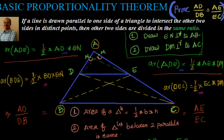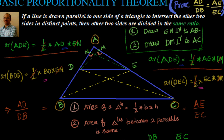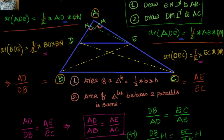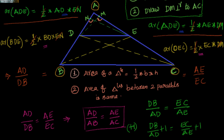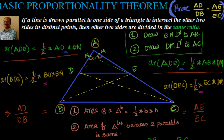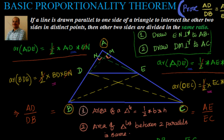I hope you understood it. It is very straightforward. We leveraged two points: area of a triangle equals half base into height, and triangle areas between two parallels are equal. We found the area of ADE taking two bases, found the area of BDE and CDE — knowing they are equal — took the ratio, and that proves it. Thanks for visiting. Bye for now, see you in the next video.